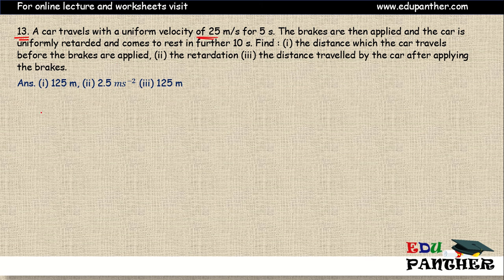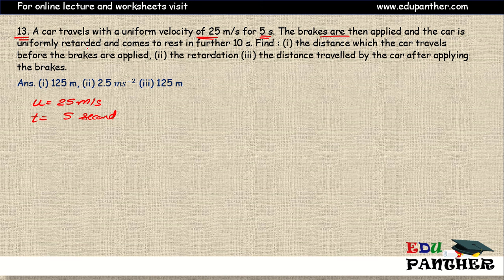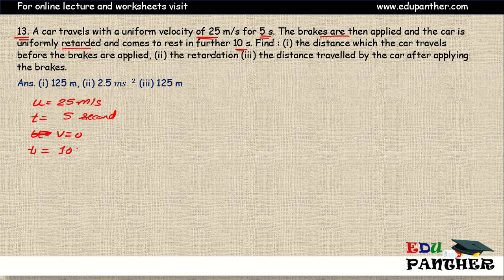Question 13: a car travels with uniform velocity of 25 meters per second for 5 seconds. Then the brakes are applied and the car is uniformly retarded. The car comes to rest — final velocity becomes zero — after 10 seconds. We have two different time intervals here: t = 5 seconds for uniform motion and t1 = 10 seconds for the braking phase.